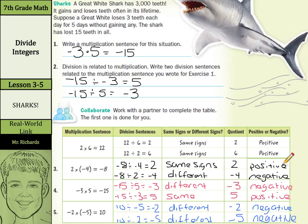So as we look at our pattern here, when we have the same signs, we had positive results. When we have different signs when we're dividing, we have negative results, just like multiplication.